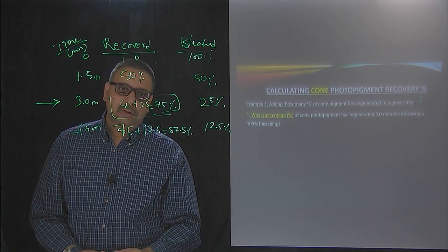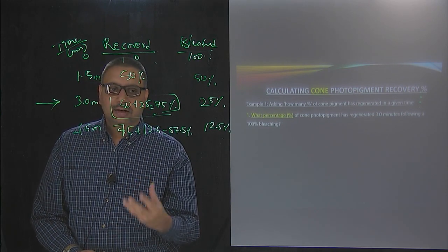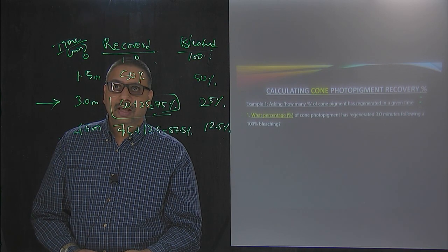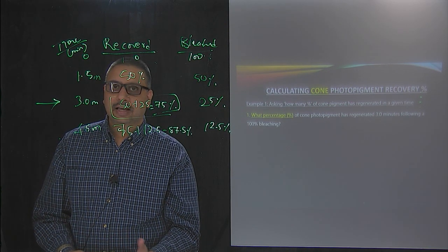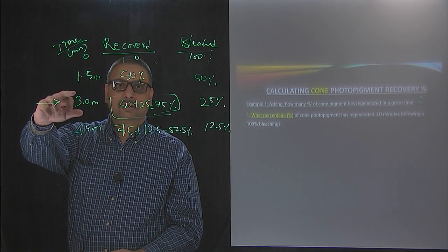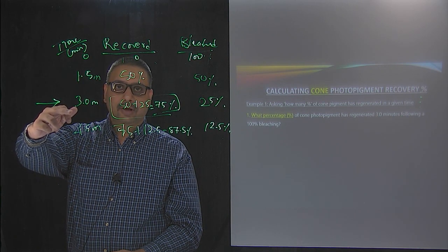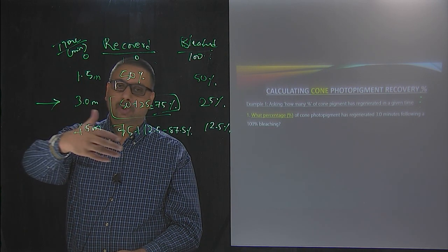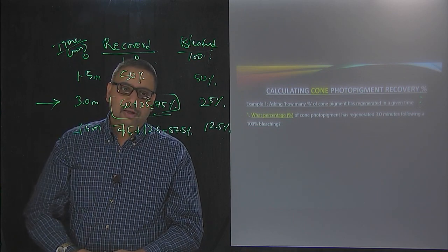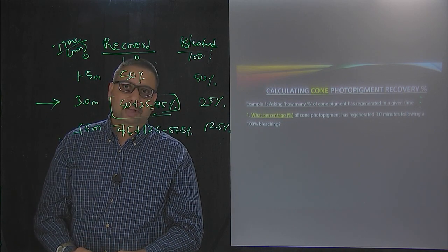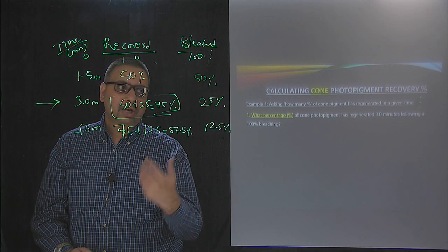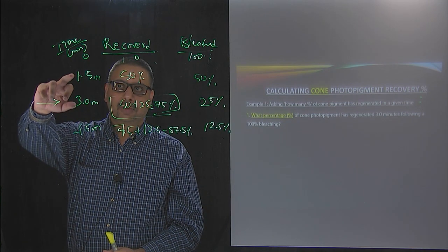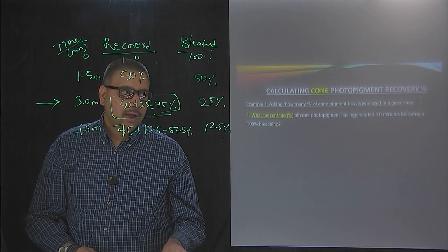An easy way to remember this: imagine cones as a kid named Chris who stole 100 candies. Chris returns half of whatever he has every 1.5 minutes. At 1.5 minutes he returns 50; at 3 minutes another 25, totaling 75 percent; at 4.5 minutes another 12.5, totaling 87.5 percent. The same logic applies to rods — just use 5-minute intervals instead of 1.5 minutes, because rods take longer to recover.